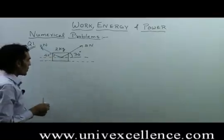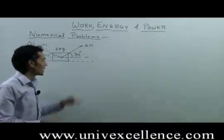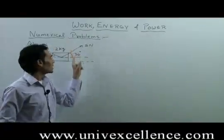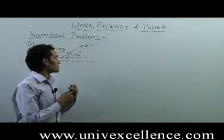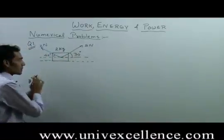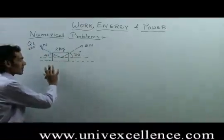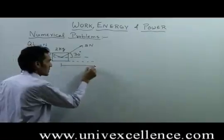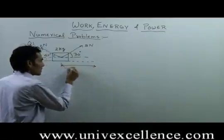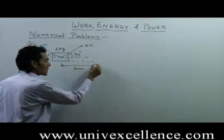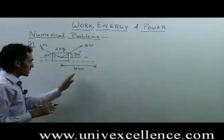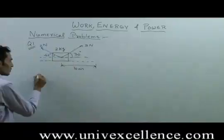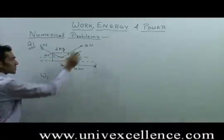The motion of the object is only in the horizontal direction — that is, the object is not moving in the upward direction. If the object is displaced in the forward direction by 10 meters, displacement of the force is 10 meters. Find the work done by the first force.